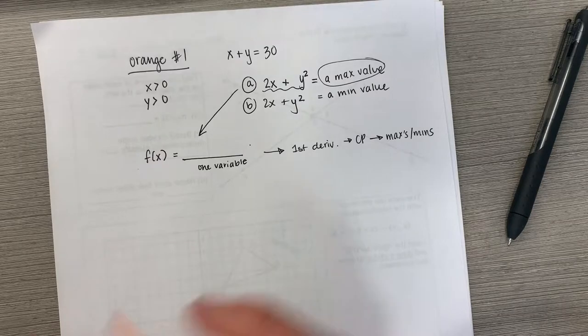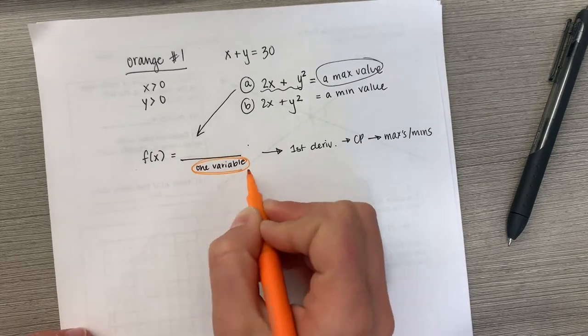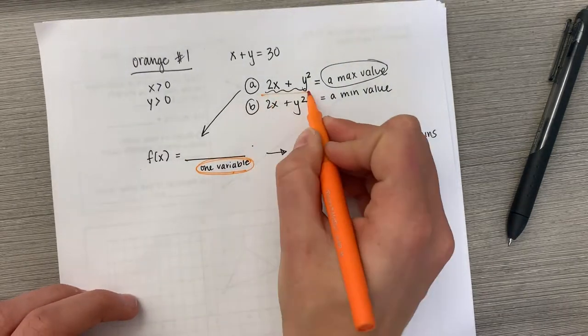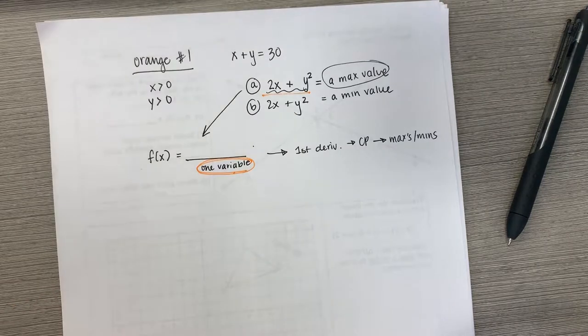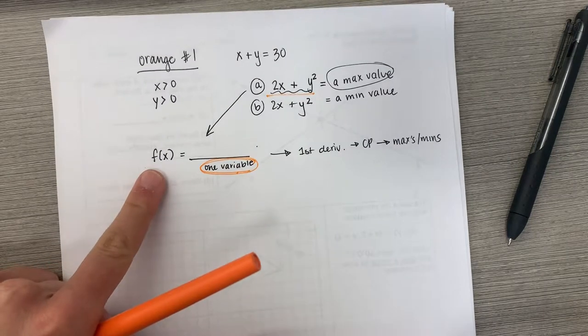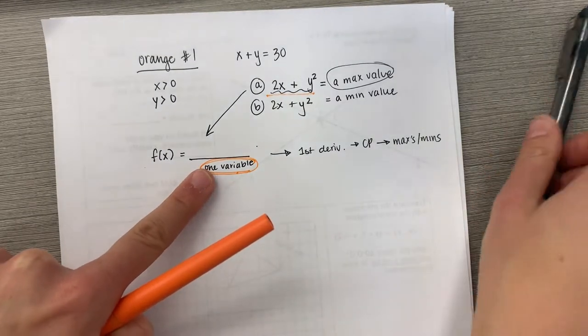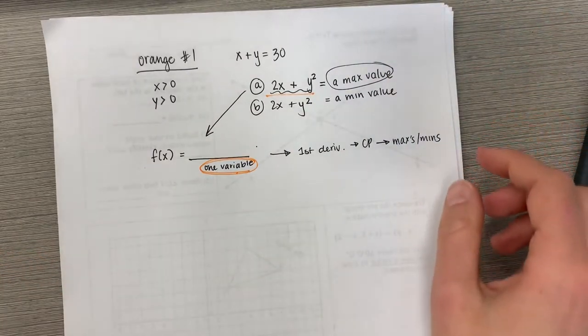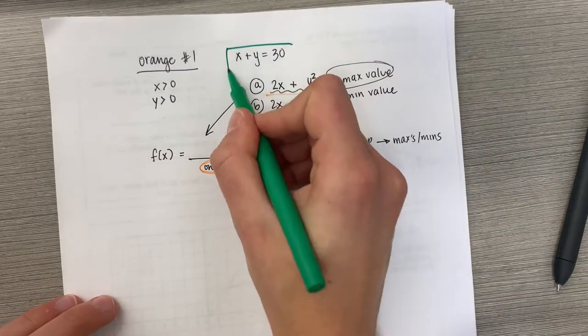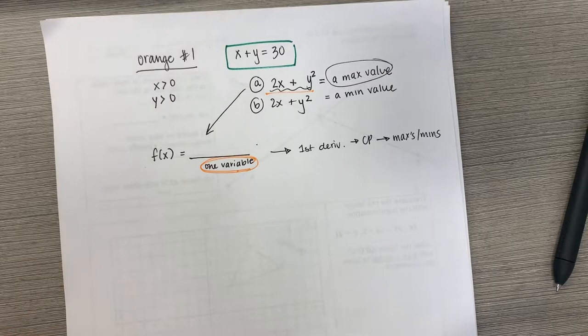But the trick here is, we don't have it in terms of one variable. We have 2x plus y squared and we want just f of x. So that is actually why they gave us x plus y equals 30.